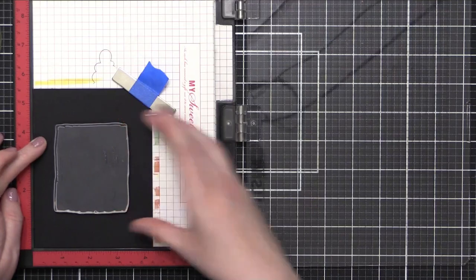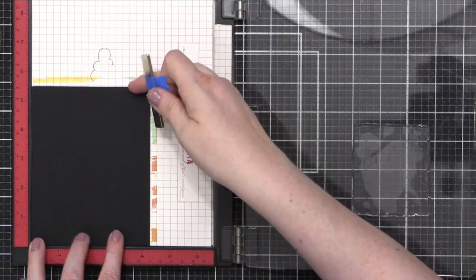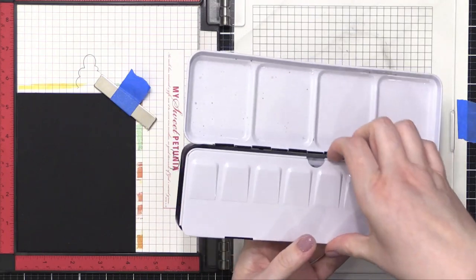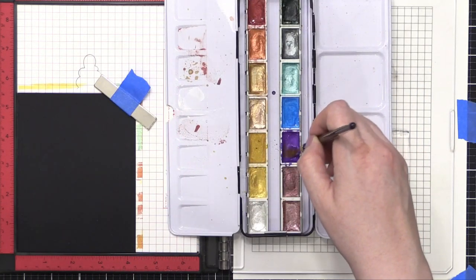I cut down my black watercolor paper to five and a half by four and a quarter, and then I put it in my MISTI stamp positioning tool and mounted that large solid block shape from the You Matter stamp set so that it's sort of in the center of my watercolor paper.